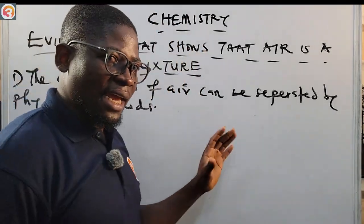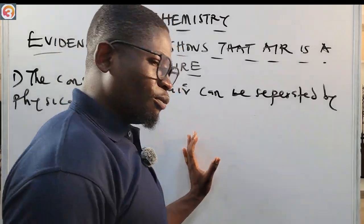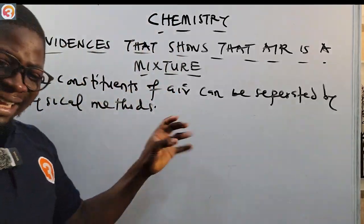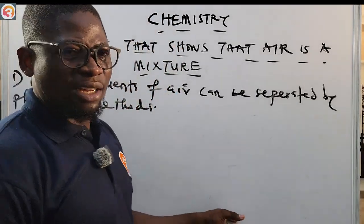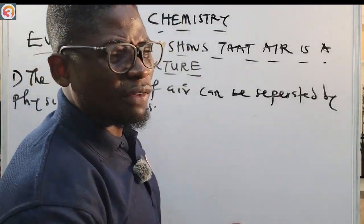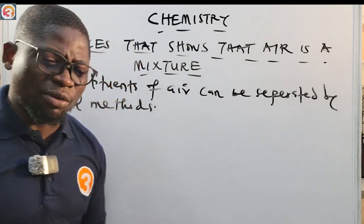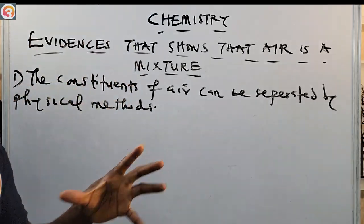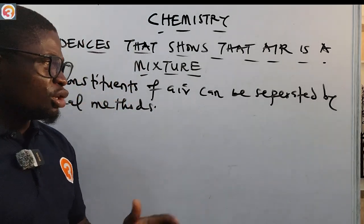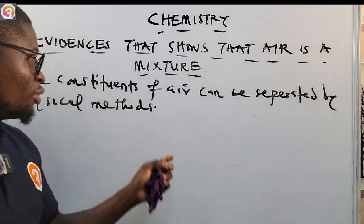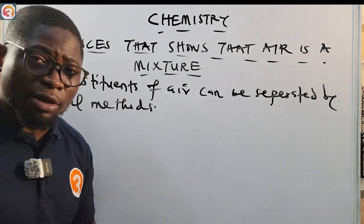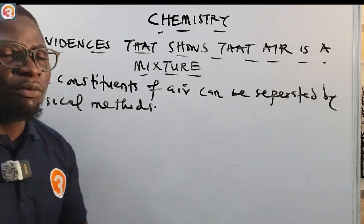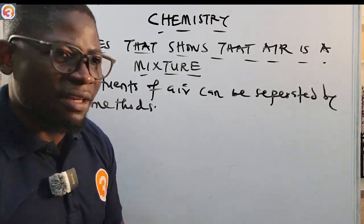Air is a homogeneous mixture of nitrogen, oxygen, argon, and 1% of other substances. Since they are a homogeneous mixture — remember when we covered elements, compounds, and mixtures — we defined what mixtures are. If you want to know more, go back to our previous episodes on the O3Schools channel.